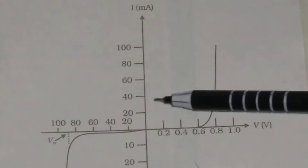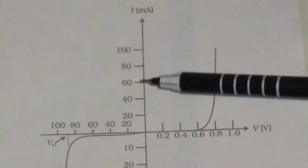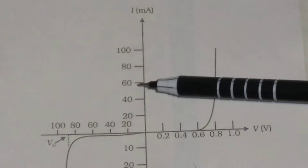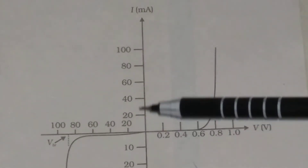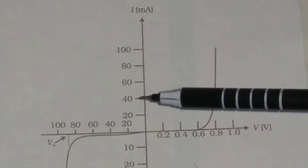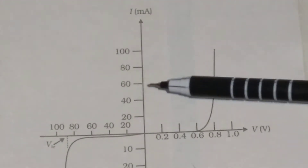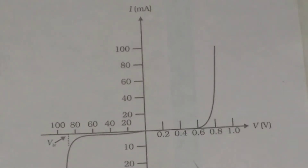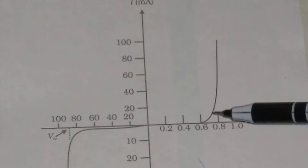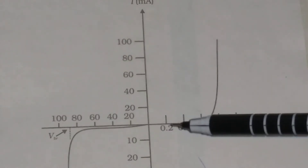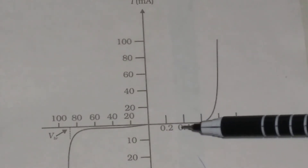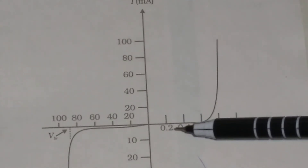The current is of the order of milliampere: 20 milliampere, 40 milliampere, 60, 80, 100. You have to take current of this order. In forward bias, the current increases very slowly at first.